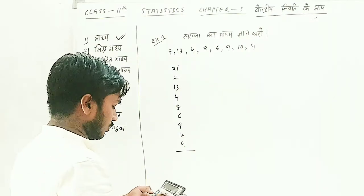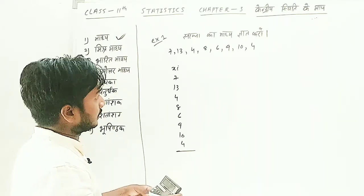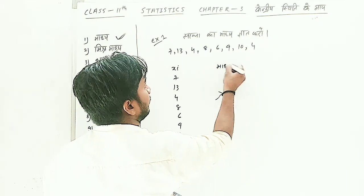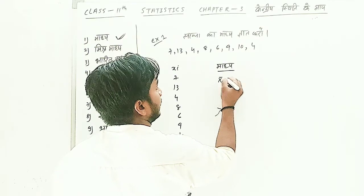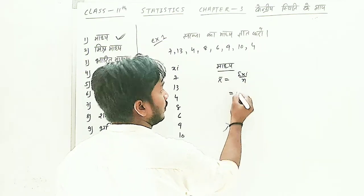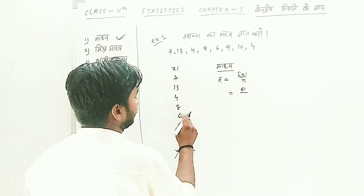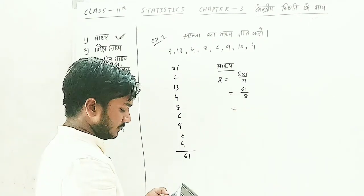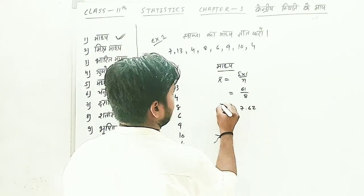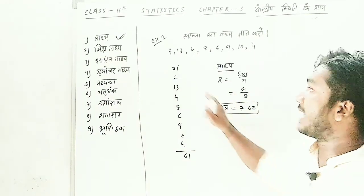Now let's compute the total. Seven plus thirteen plus four plus eight plus six plus nine plus ten plus four equals sixty-one. So ΣXi = 61. We divide by n, which is 8 (counting all eight values). So X̄ = 61 ÷ 8. I think now you are clear on how to find X̄ when we have only Xi.